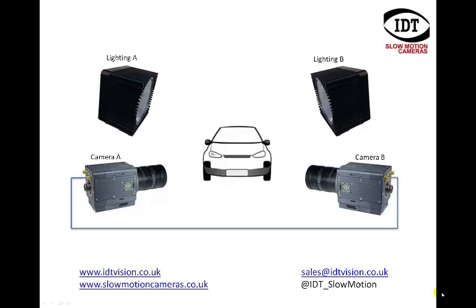If we extend that sync cable to drive the lighting for camera B and we introduce a delay of 500 microseconds — this example is for 1000 frames per second, so the delay is exactly half of the framing rate — then lighting B will only light the image for camera B.